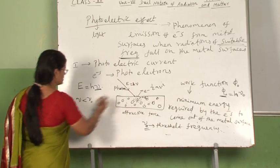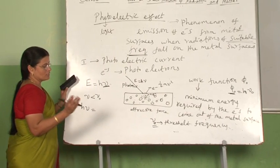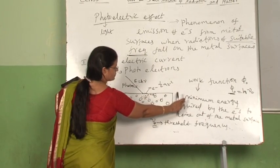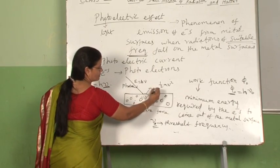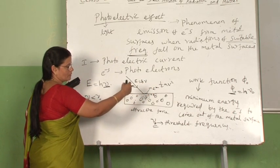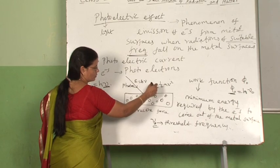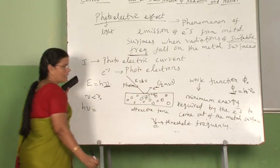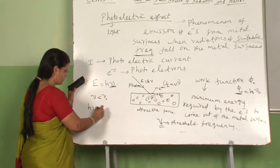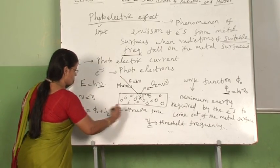The incident energy h-nu is utilized in two ways. One is to overcome the work function, and the remaining energy is imparted to the photoelectrons coming out of the metal surface as kinetic energy. So we can write this equation: h-nu equals work function plus half m v squared.